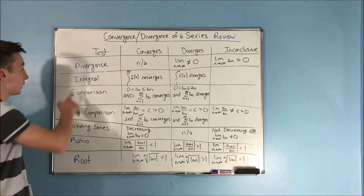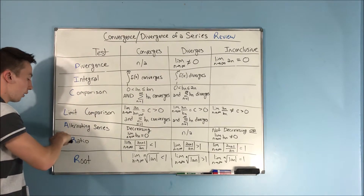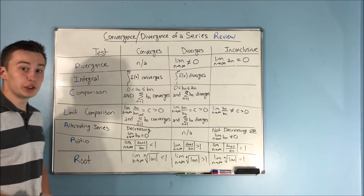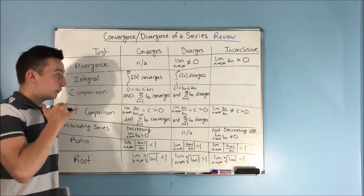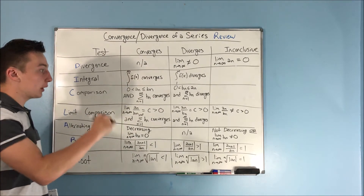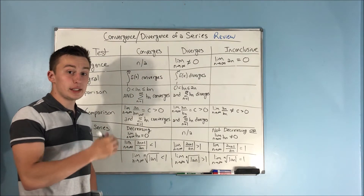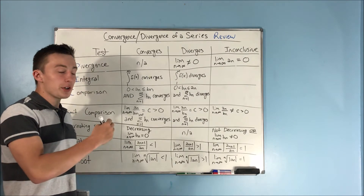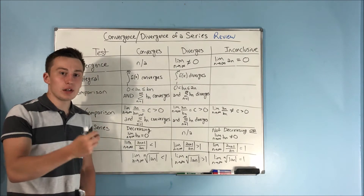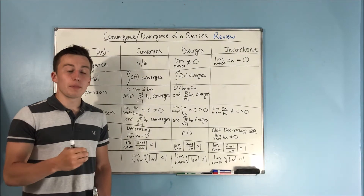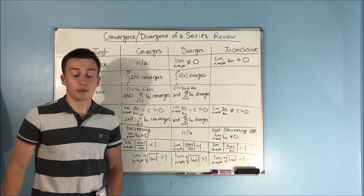In the next video, we'll be talking about the acronym DICLAR, which is going to help you have a method of performing these tests on a series to see if it's convergent or divergent when you're not given a specific test to use. So that's going to do it for this video. If this video helped you, make sure to leave a like and subscribe. You can also view the playlist for sequences and series, and the next video in the series.